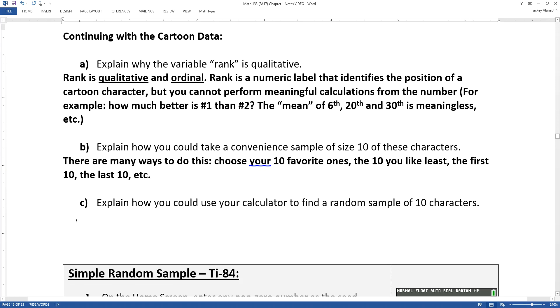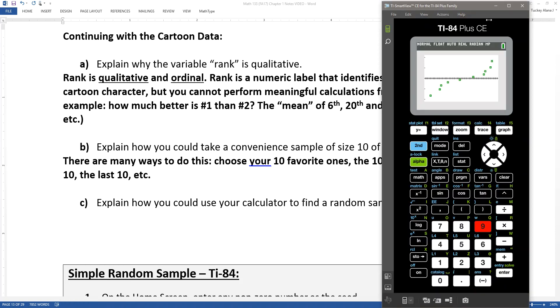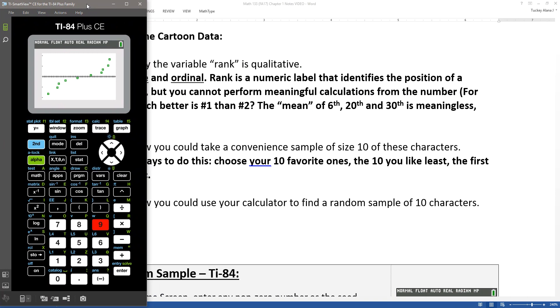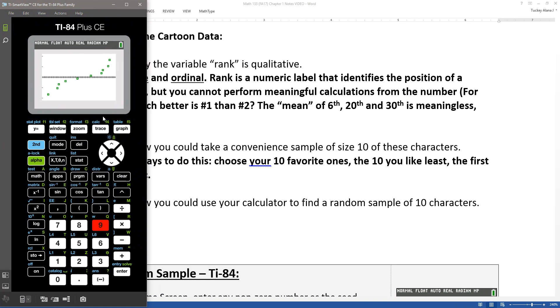How could we use a calculator to find a simple random sample of 10 characters? That's what we're really here for. Let's pull up a calculator. I'm going to first do this with a color calculator, kind of the newer system, and then I'm actually going to show it with the older system. If you have an older calculator, just kind of zip ahead by a minute or so and you'll see a different calculator screen.